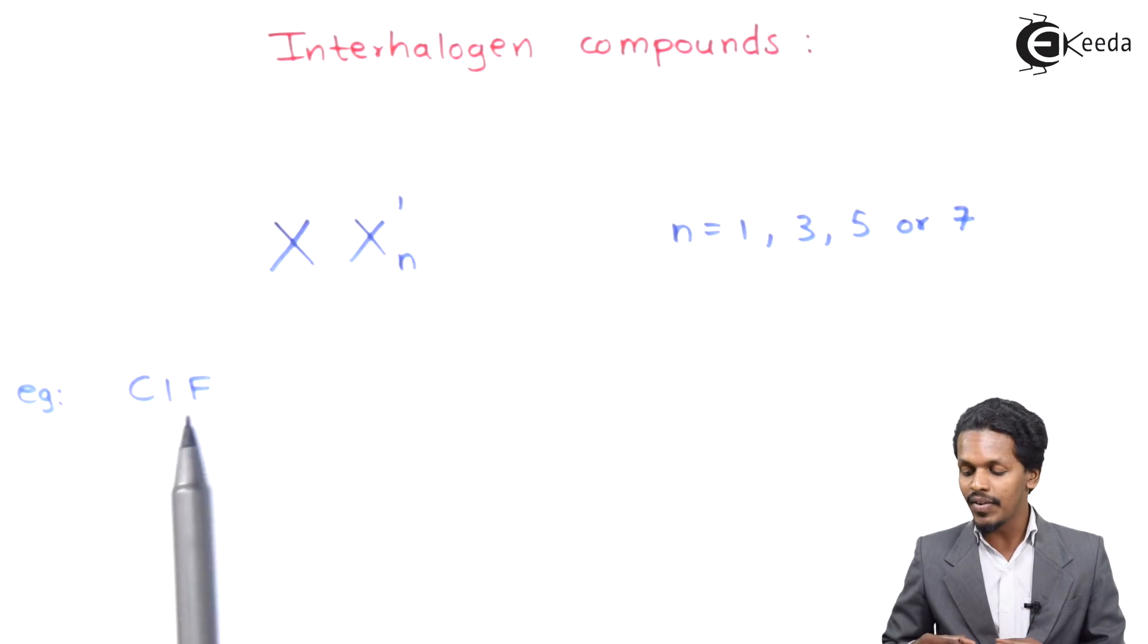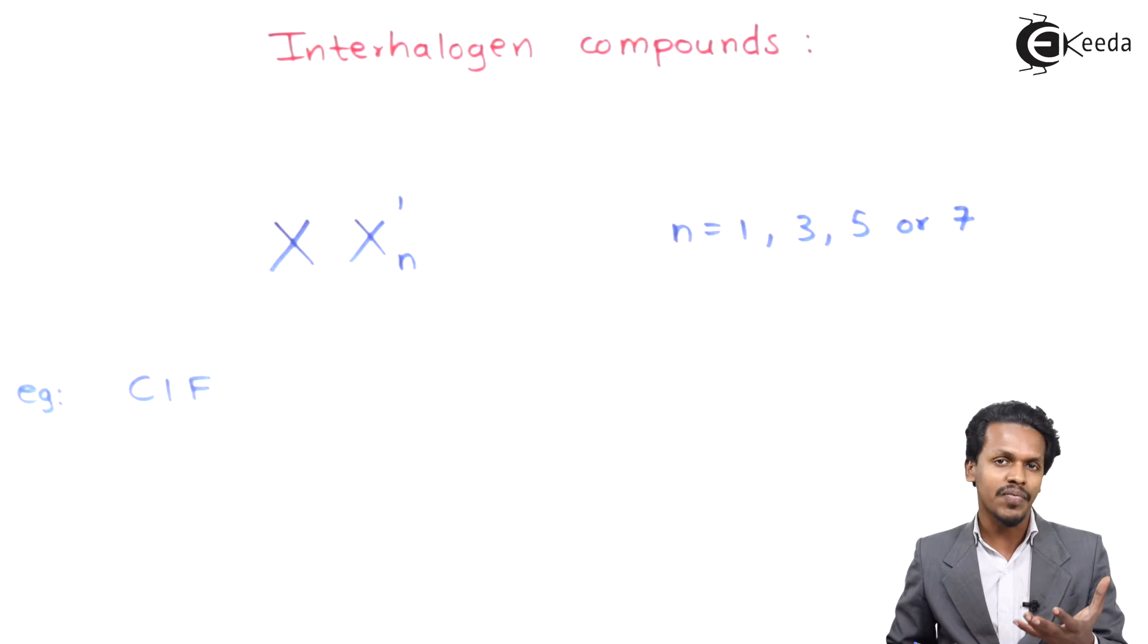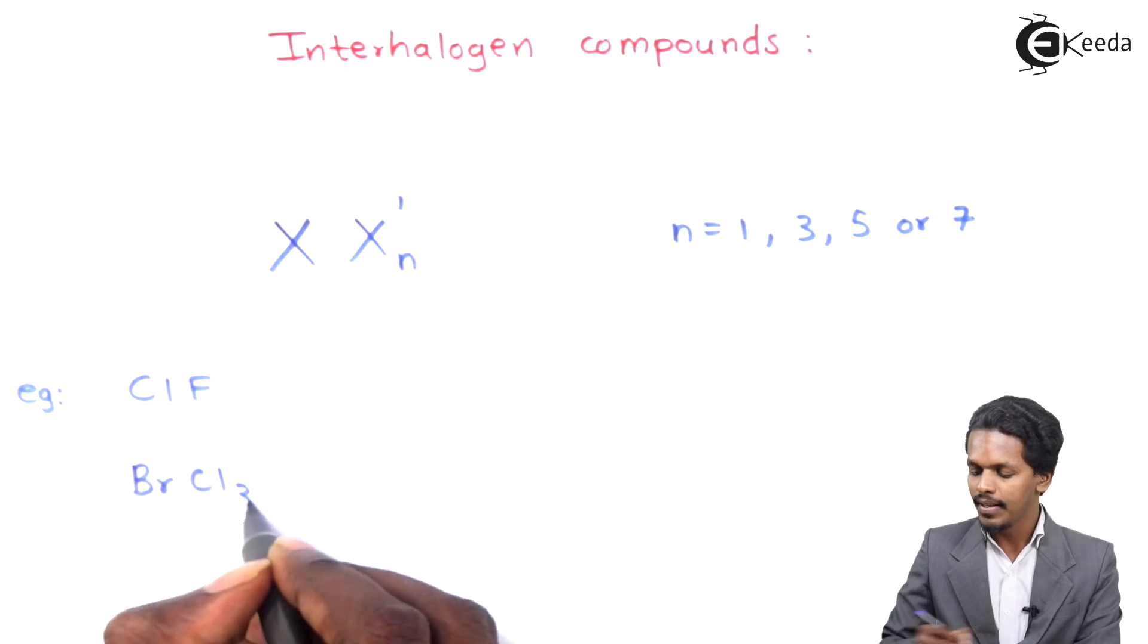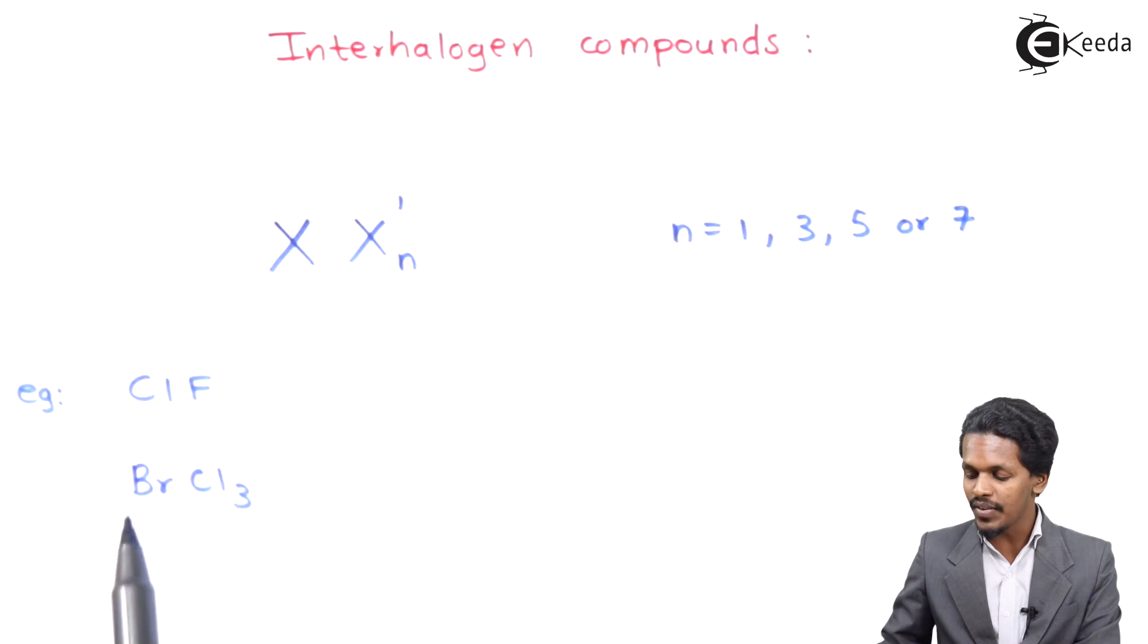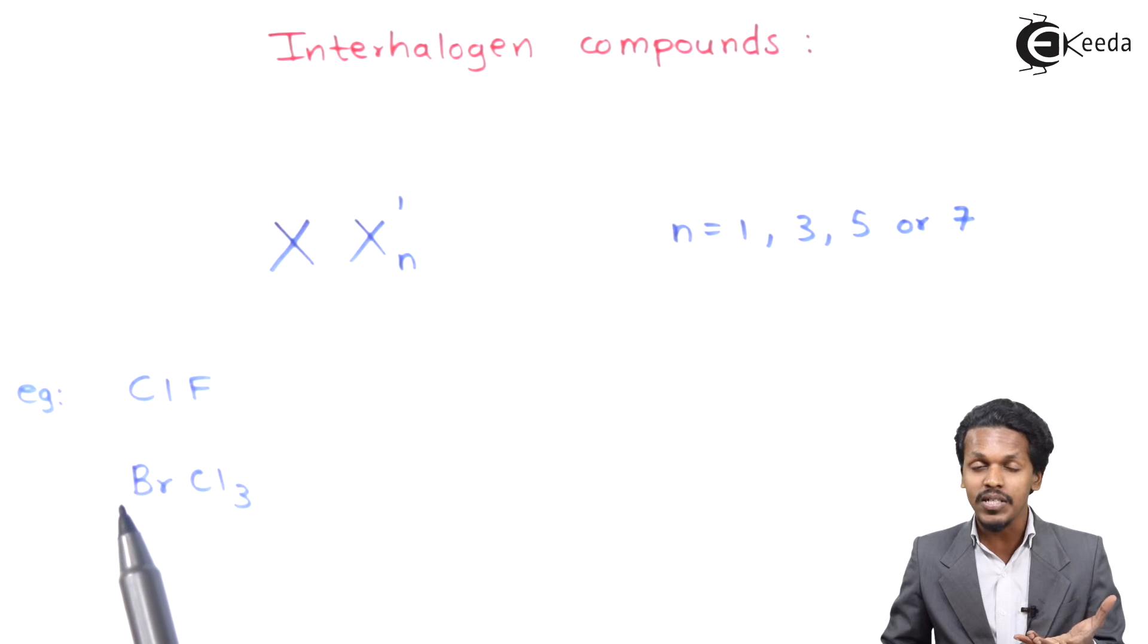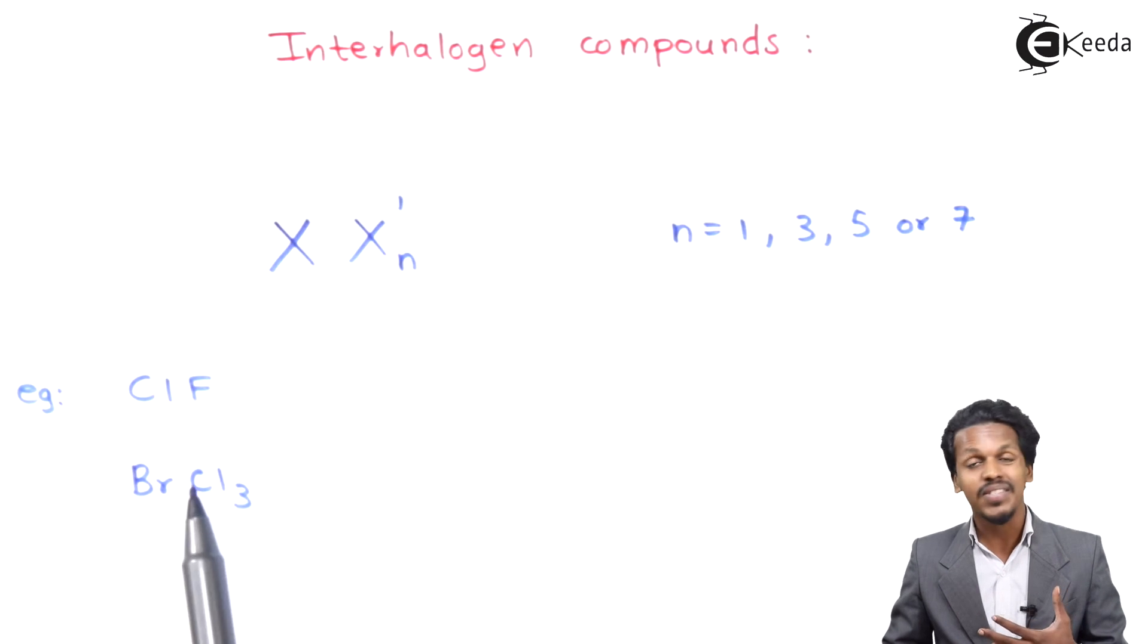This is an example where we considered ClF. If I'm talking about another example, we could consider BrCl3. In this case, if we compare the halogens like bromine and chlorine, we'll find that bromine is the one which is more electropositive and also has more atomic size, bigger atomic size compared to that of Cl. That is what forms BrCl3.